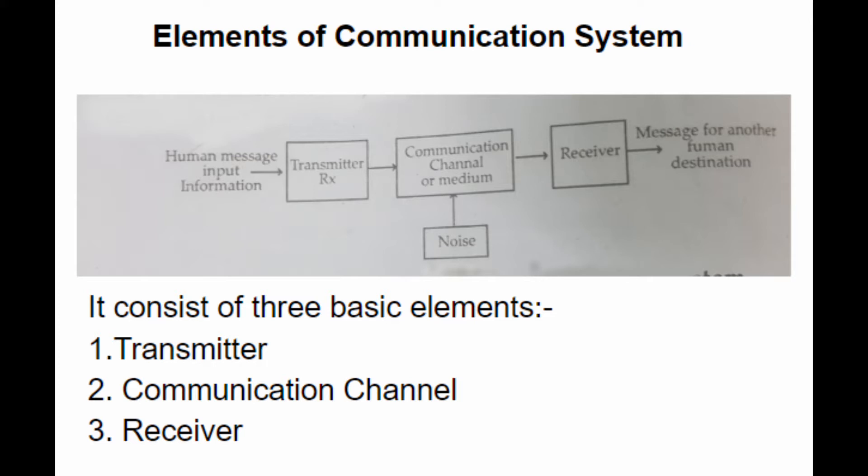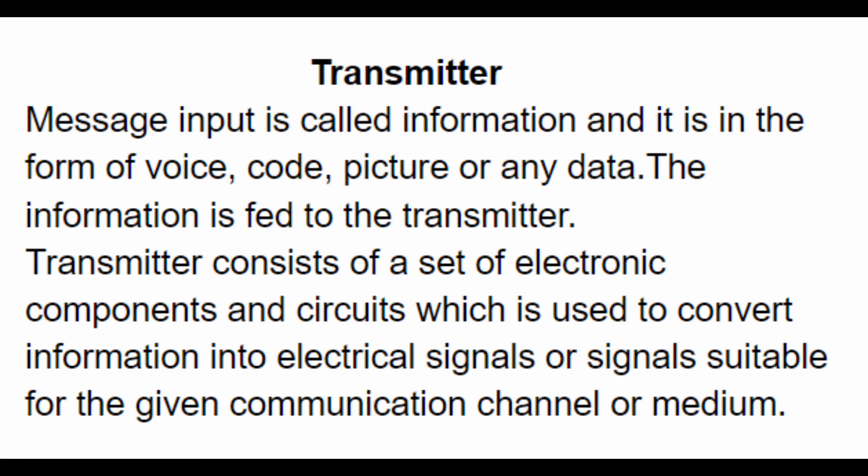The communication system consists of three basic elements: transmitter, communication channel or medium, and receiver. The message input is called information and it is in the form of voice, code, picture, or any other data. This information is fed to the transmitter. The transmitter consists of a set of electronic components and circuits which convert information into electrical signals suitable for the given communication channel or medium.